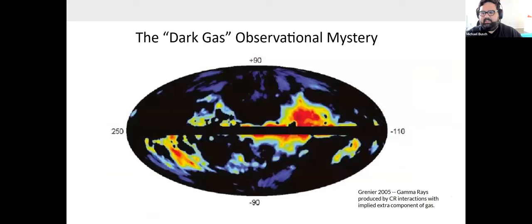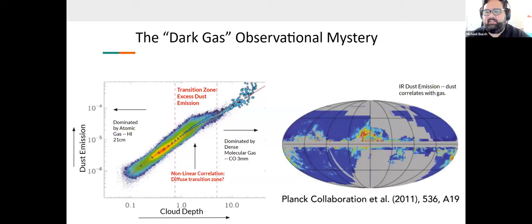Something occurred roughly in 2005 with the indirect observation of dark gas, so-called dark gas. We now understand this is dark molecular gas, a component of molecular gas not traced by CO and not traced by H1. What we're looking at is the Fermi LAT implication of this gas. These are gamma rays produced by cosmic ray interactions with an implied extra component of gas discovered by Grenier in 2005. These cosmic rays are interacting with an extra component of gas not seen by H1 or CO. This is also seen by Planck.